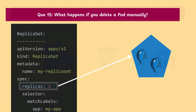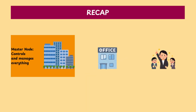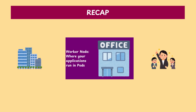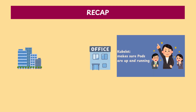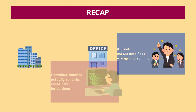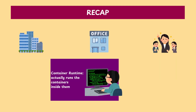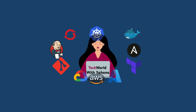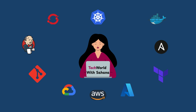So that's it for today. Just to recap: the master node controls and manages everything. The worker nodes are where your applications run in pods. The kubelet makes sure pods are up and running, while the container runtime actually runs the containers inside them. See you in the next one.